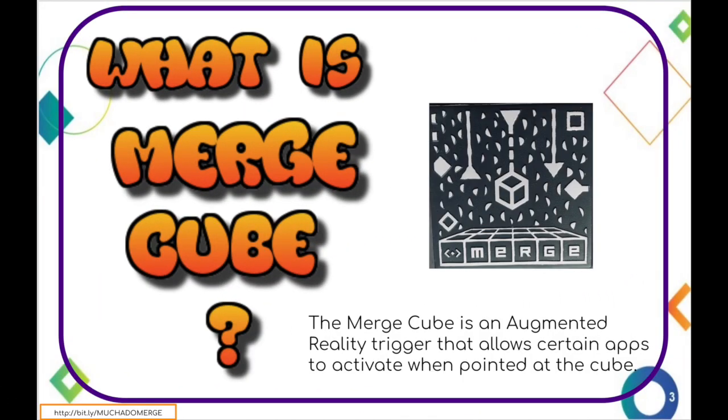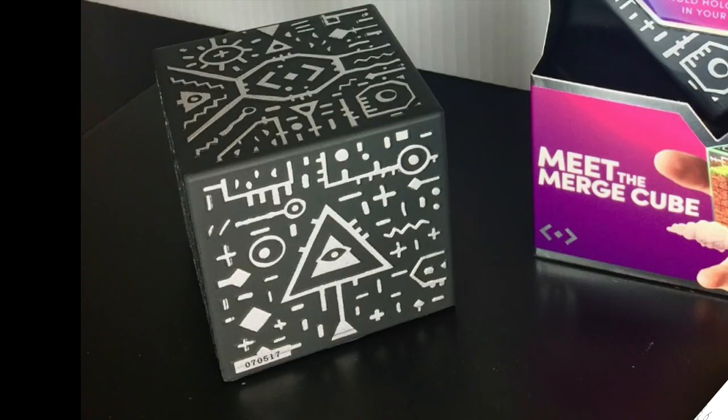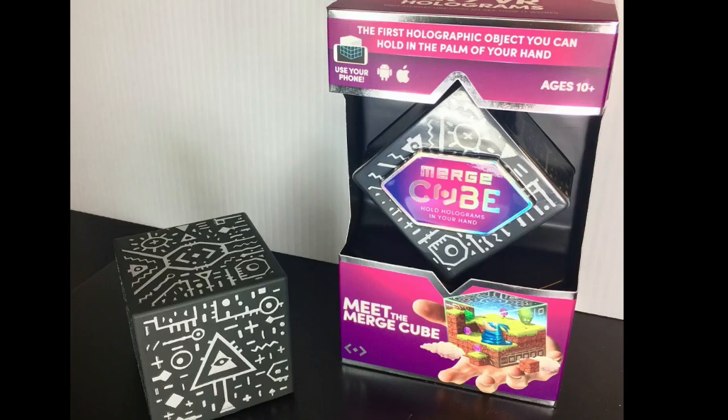So let's get started. What is a Merge Cube? The Merge Cube is just a cube with a pattern on all six sides and the material it's made of is kind of spongy. Whenever I show the Merge Cube to my students, they get pretty excited when they first see it and they ask me, ooh, is that an Illuminati symbol? You can purchase the Merge Cube on Amazon for about $20.